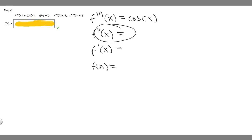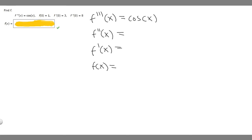Let's start with the first one. We need to find the antiderivative of cosine of x. The antiderivative of cosine of x is going to be sine of x plus c, because the antiderivative of cosine of x is sine of x, and then we add our constant c.